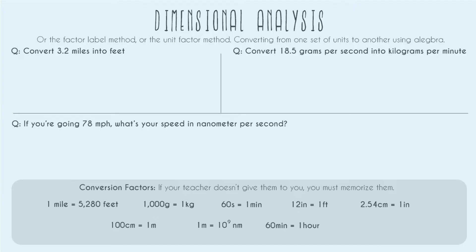So first, let's go ahead and do this first problem. We're going to convert 3.2 miles into feet. The first thing we're going to do for these problems is we're going to have this grid system. That's usually how dimensional analysis is shown. Sometimes it's just going to be parentheses, or it might look a little bit different, but in general we're going to set up something that looks like this and plug our numbers into it.